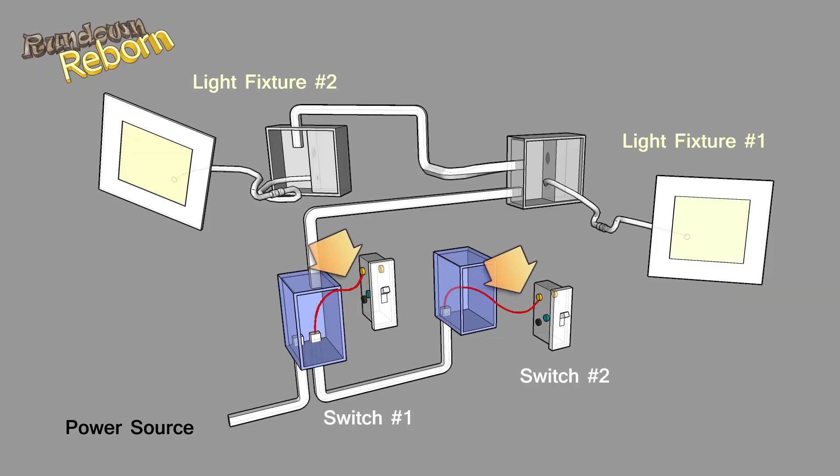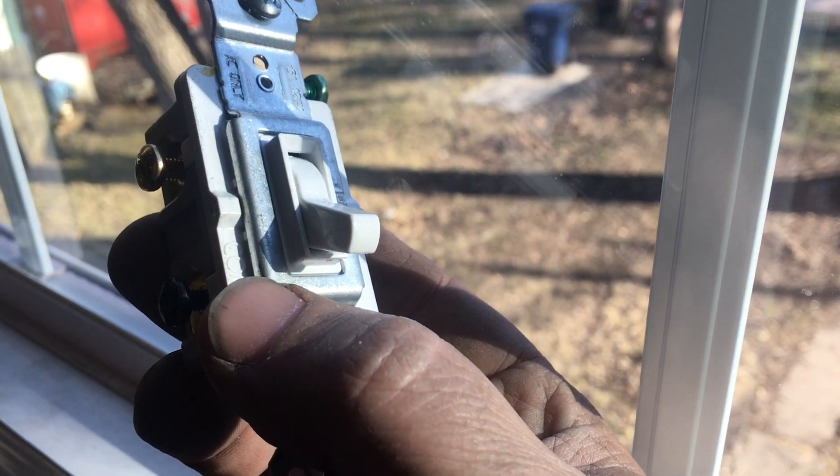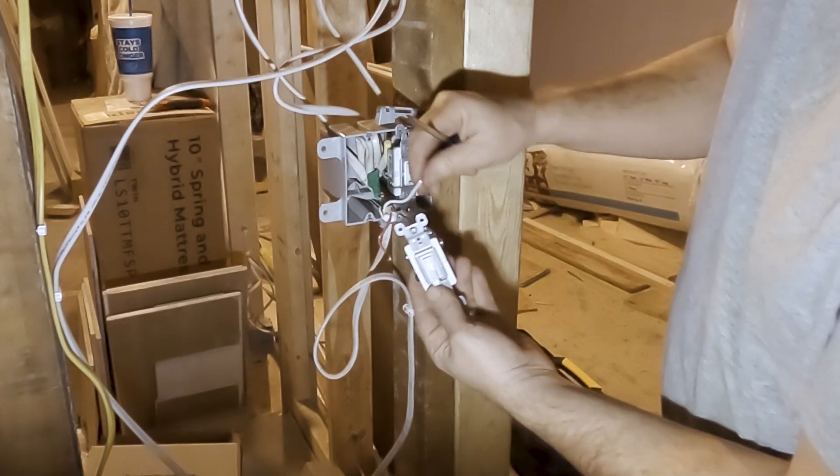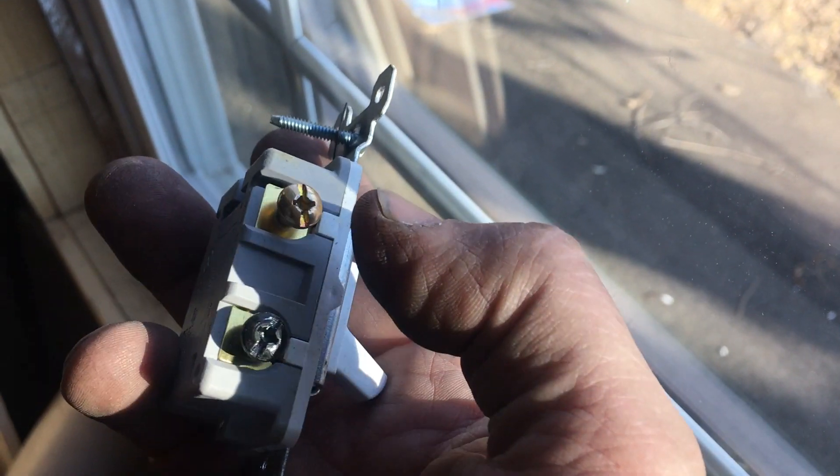The first thing I want to do is connect those common wires to the three-way light switches. These are special switches made specifically for three-way connections. I want to connect those to the gold colored brass screw on the switch.